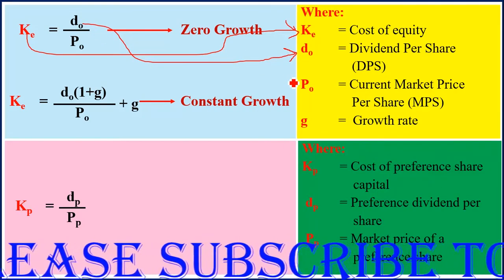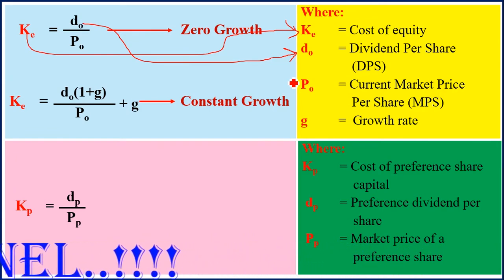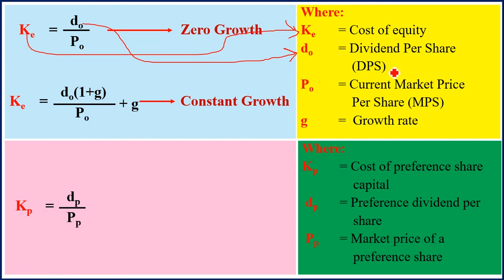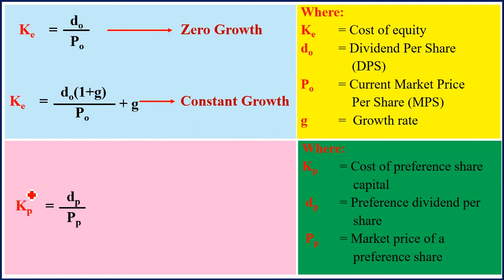Here, Ke is the cost of equity, D0 is the dividend per share — for example, if you earn 10,000 shillings in dividends across 10,000 shares, DPS is 1 shilling per share. P0 is the current market price per share (MPS) — for example, shares bought at 5 shillings may later sell at 10 shillings. G is the growth rate in dividends.